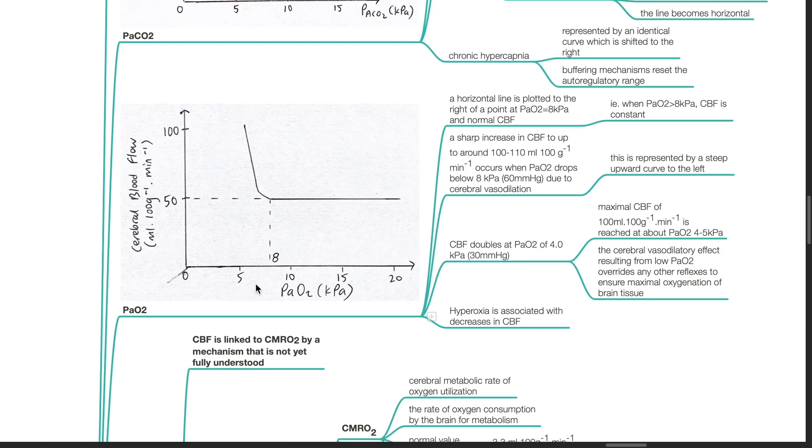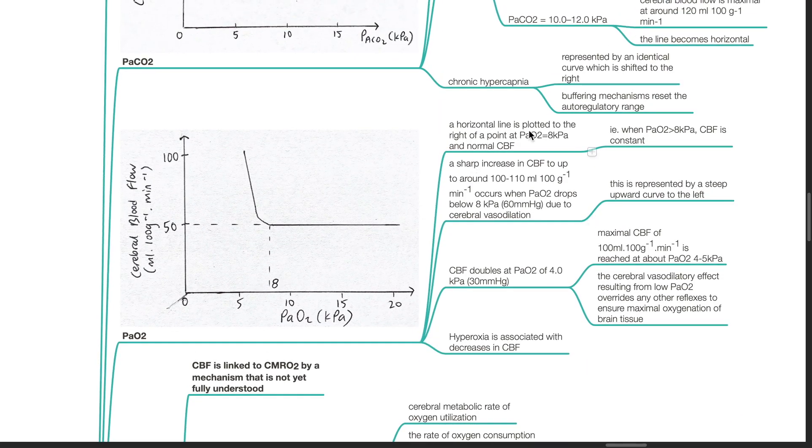PaO2. A horizontal line is plotted to the right of a point at PaO2 equals 8 kPa and normal CBF. When PaO2 is more than 8 kPa, CBF is constant. A sharp increase in CBF to up to around 100 to 110 mL per 100 g per minute occurs when PaO2 drops below 8 kPa or 60 mmHg due to cerebral vessel dilation.